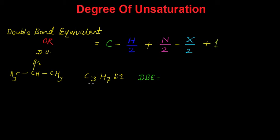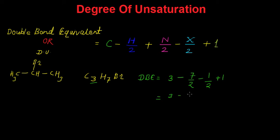Total number of carbon atoms are 3, so we have to write 3 minus H by 2. H is the total number of hydrogen atoms, so 7 by 2, plus N by 2. Here there is no nitrogen. Minus X by 2 — again we have 1 halogen here, so this will become 1 by 2 plus 1. If you calculate this we will get 3 minus 3.5 minus 0.5 plus 1, and this will equal to 0. This 0 indicates that there is no degree of unsaturation or double bond equivalent in this structure — it means that there is no double bond, triple bond, or ring in this structure.